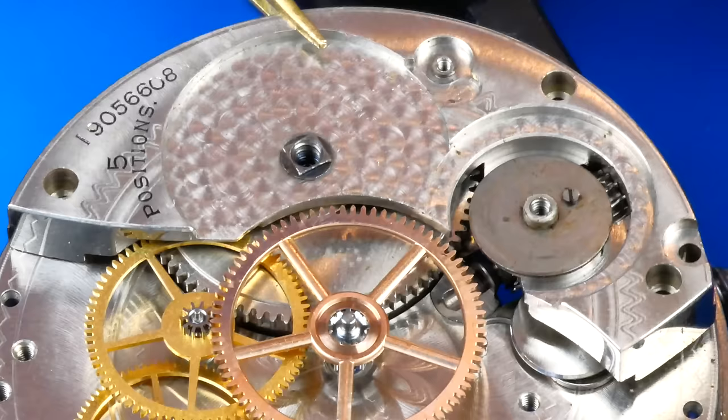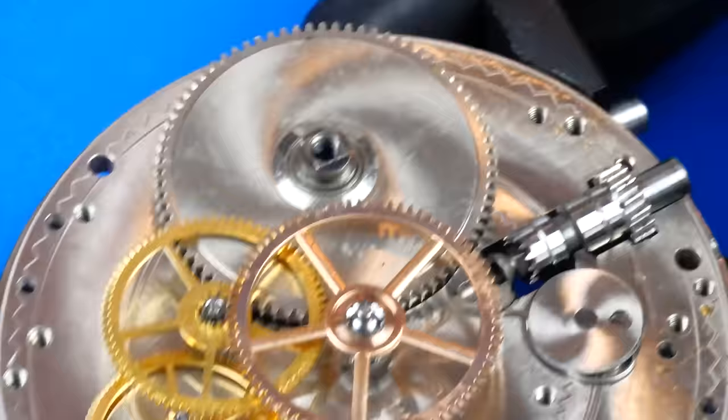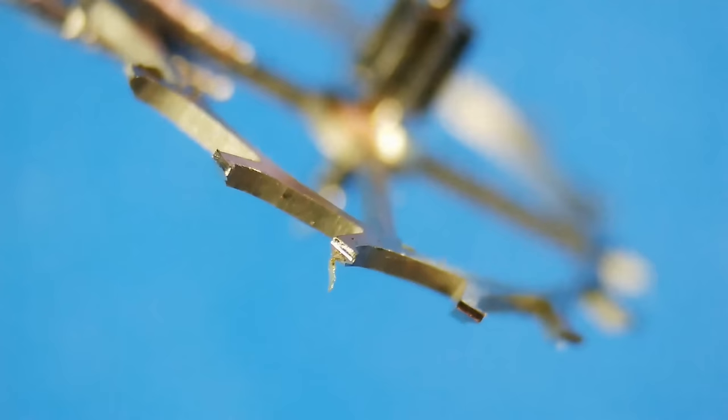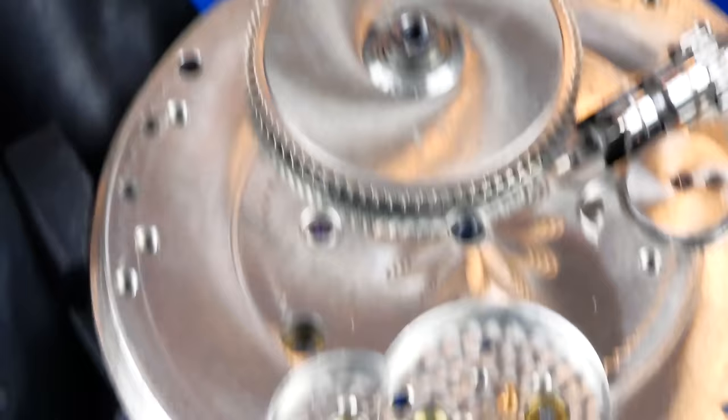The click is removed and then the barrel bridge is lifted away. I'm now removing the center wheel, also known as the second wheel, the third wheel, the fourth wheel, and the escape wheel. Here I'm continuing to inspect all the parts, including each tooth of the escape wheel.